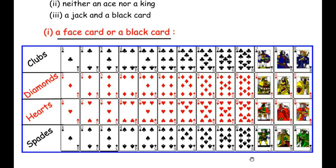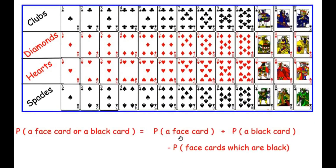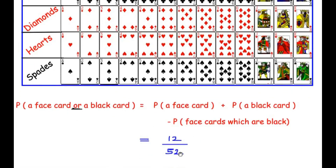We have to find the probability of getting a face card or a black card. The probability of getting a face card or a black card is represented as: probability of getting a face card plus — whenever you see the word 'or' it represents addition of the probabilities — probability of getting a black card, minus probability of getting face cards which are black. There are total 12 face cards, so probability of getting a face card is 12 out of 52.